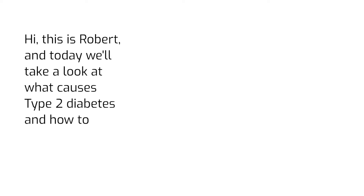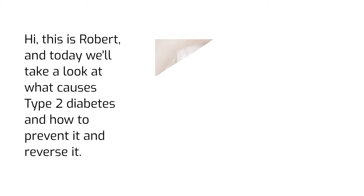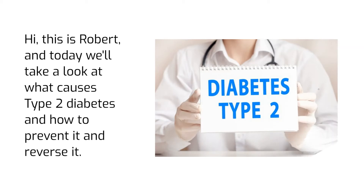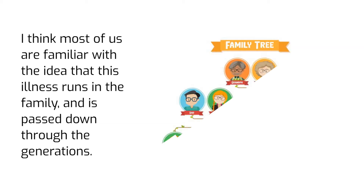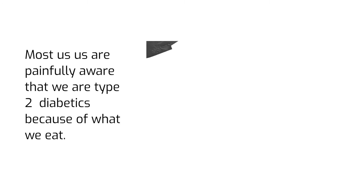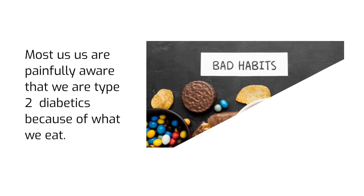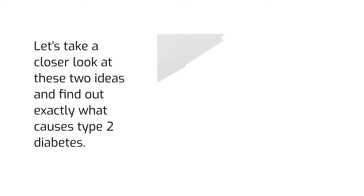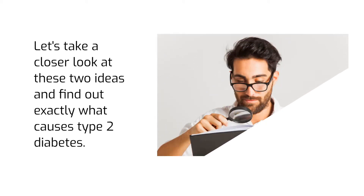Hi, this is Robert and today we'll take a look at what causes type 2 diabetes and how to prevent and reverse it. I think most of us are familiar with the idea that this illness runs in the family and is passed down through the generations. Most of us are painfully aware that we are type 2 diabetics because of what we eat. Let's take a closer look at these two ideas and find out exactly what causes type 2 diabetes.